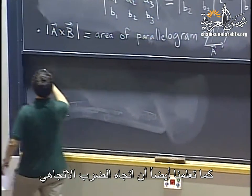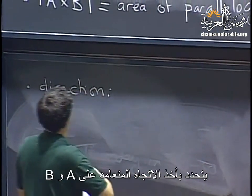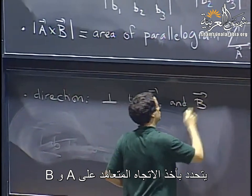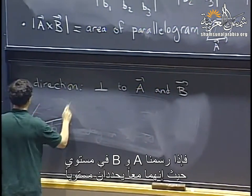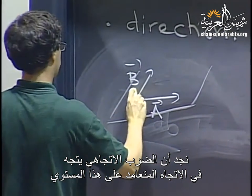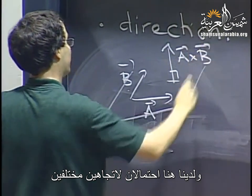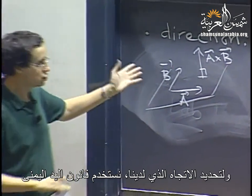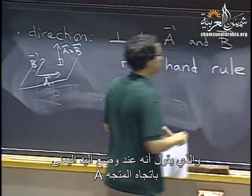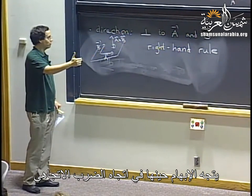The direction of a cross product is given by taking the direction perpendicular to both a and b. If you draw a and b in a plane — they determine a plane together — then the cross product goes in the direction perpendicular to that plane. There are two possible directions, and to decide which one, we use the right-hand rule: extend your right hand in the direction of vector a, curve your fingers toward b, and your thumb points in the direction of the cross product.